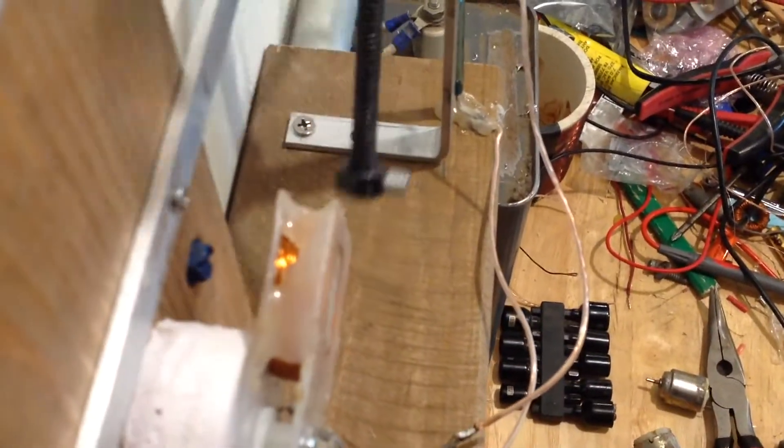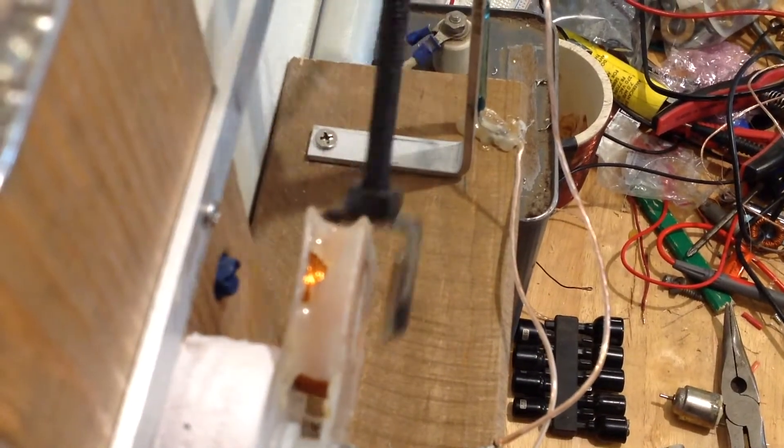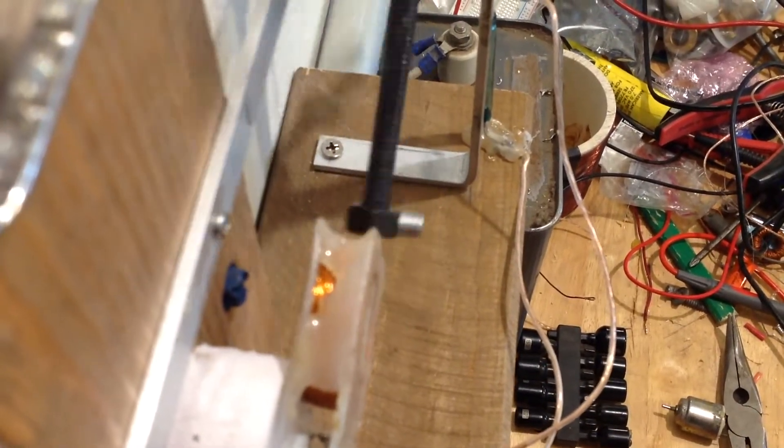You get two pulses per revolution. And you can see the reed, that big reed switch jump a little bit each time the magnets come by. That drags it down a little bit.